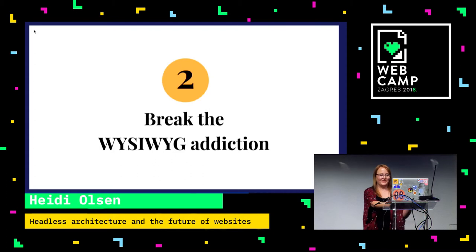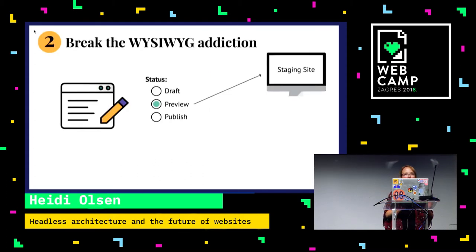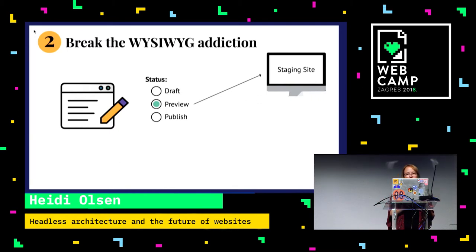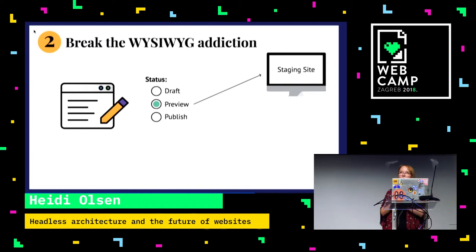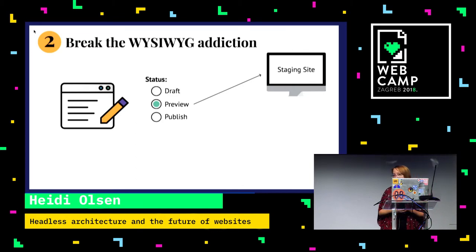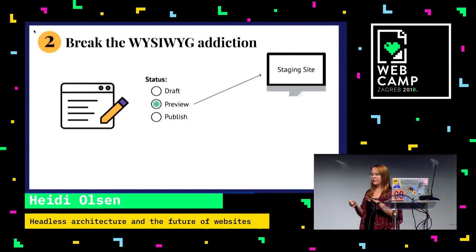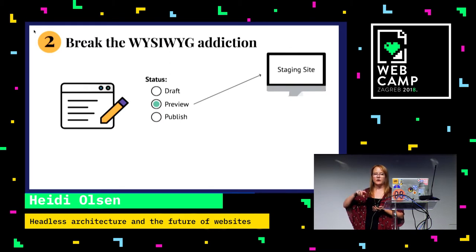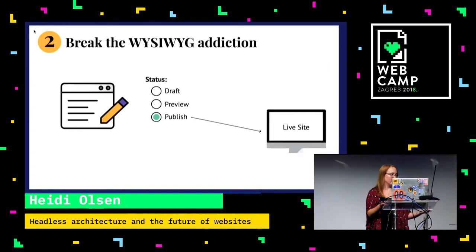Two: break the WYSIWYG addiction. This is one of the hardest things to talk to clients about, because they're so used to controlling the presentation of their content. But you need to let them know that without WYSIWYG, all your content will have consistent patterns because you're not ruining it with inline styling. The biggest legitimate concern they raise is that they can't preview content before it's published. What you can do is add metadata for content status — draft, save to preview, or publish. If they save to preview, it can send to a staging site so they can see it live before they hit publish.